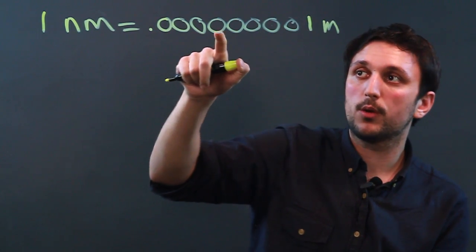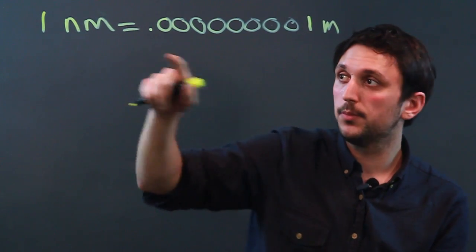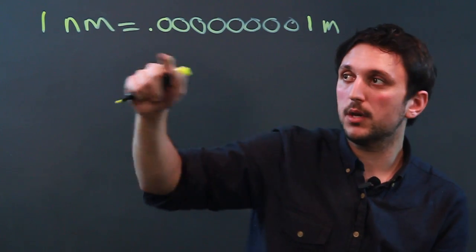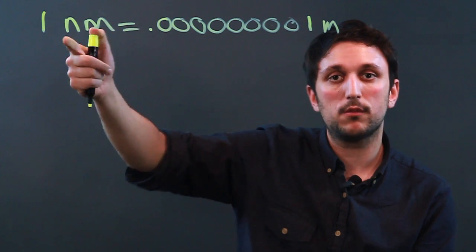So it's one, two, three, four, five, six, seven, eight, nine spaces when you write the one. So one nanometer equals one billionth of a meter. Nano generally means one billionth. If you're dealing with liters or grams, same idea.